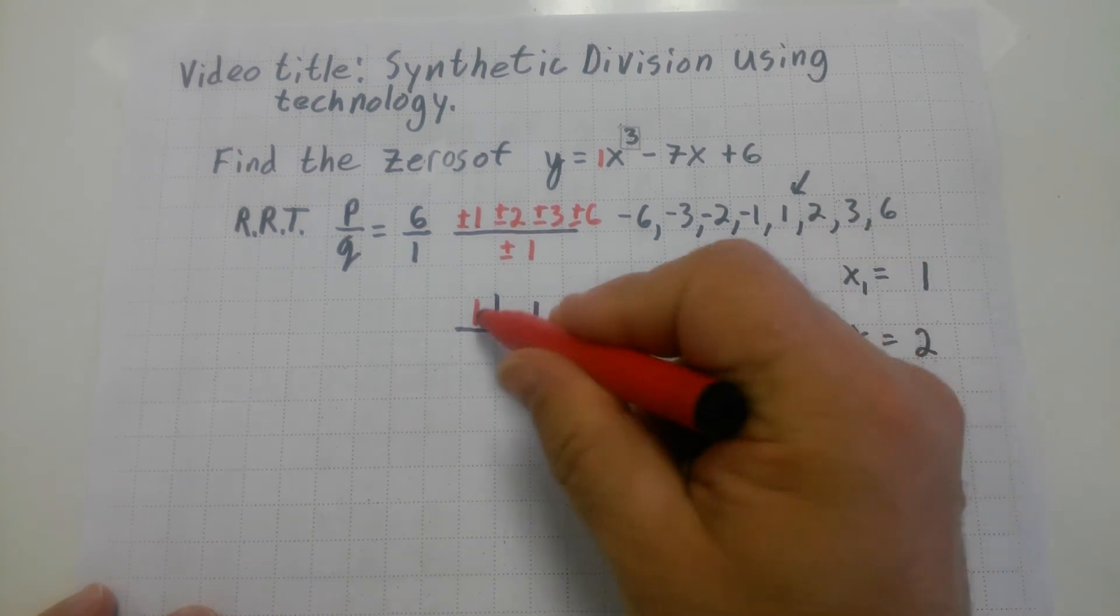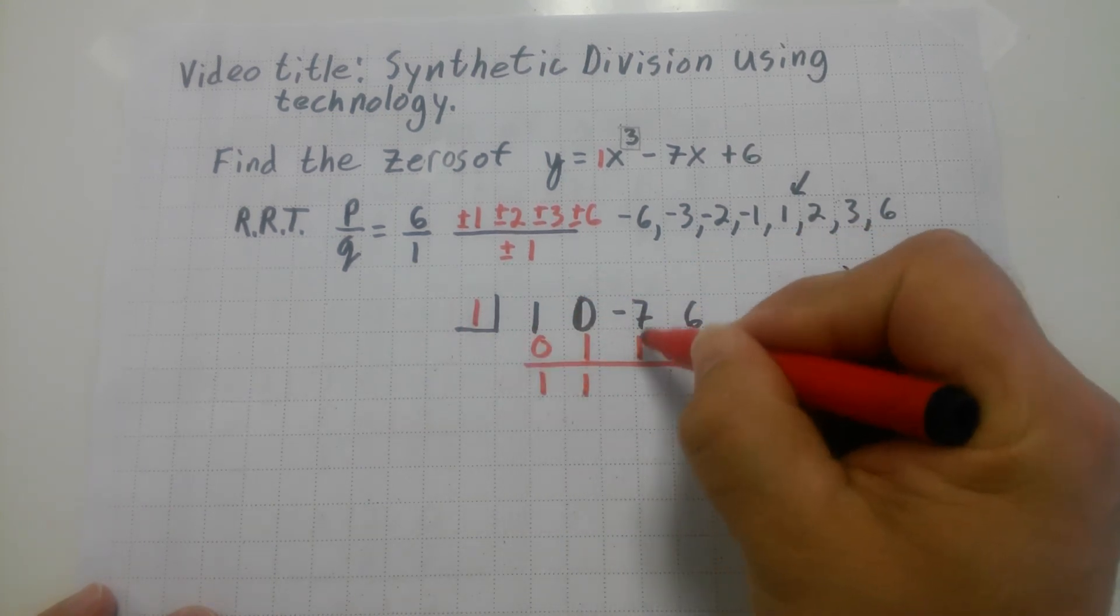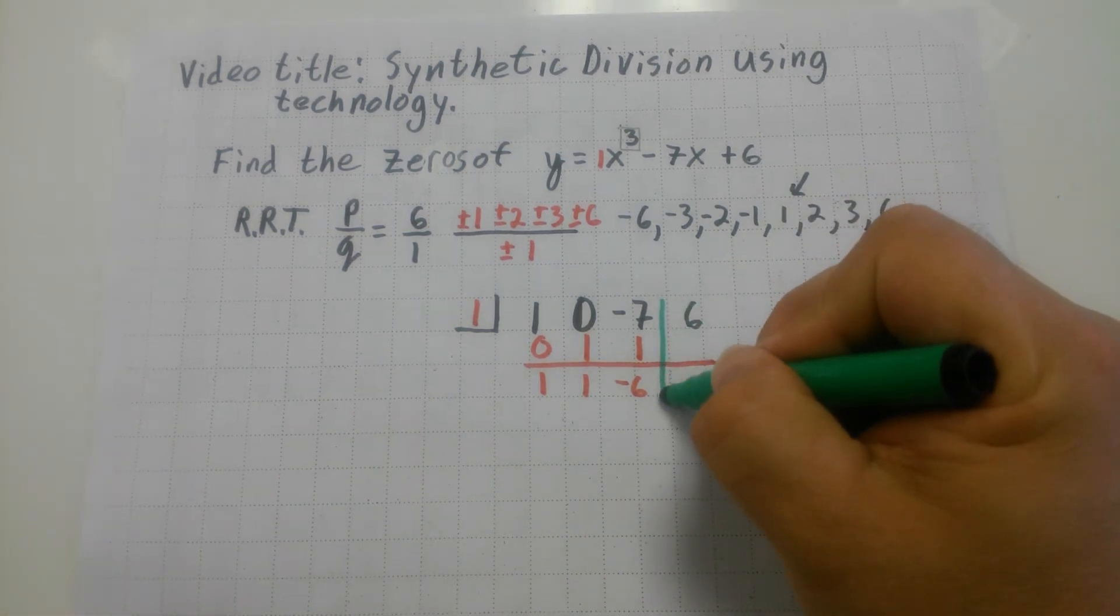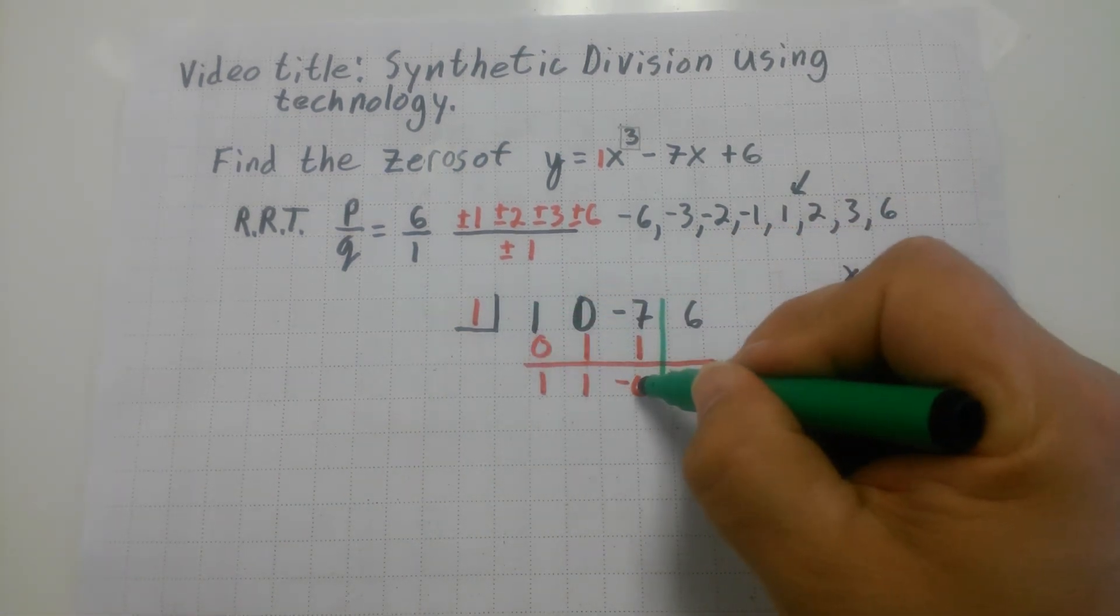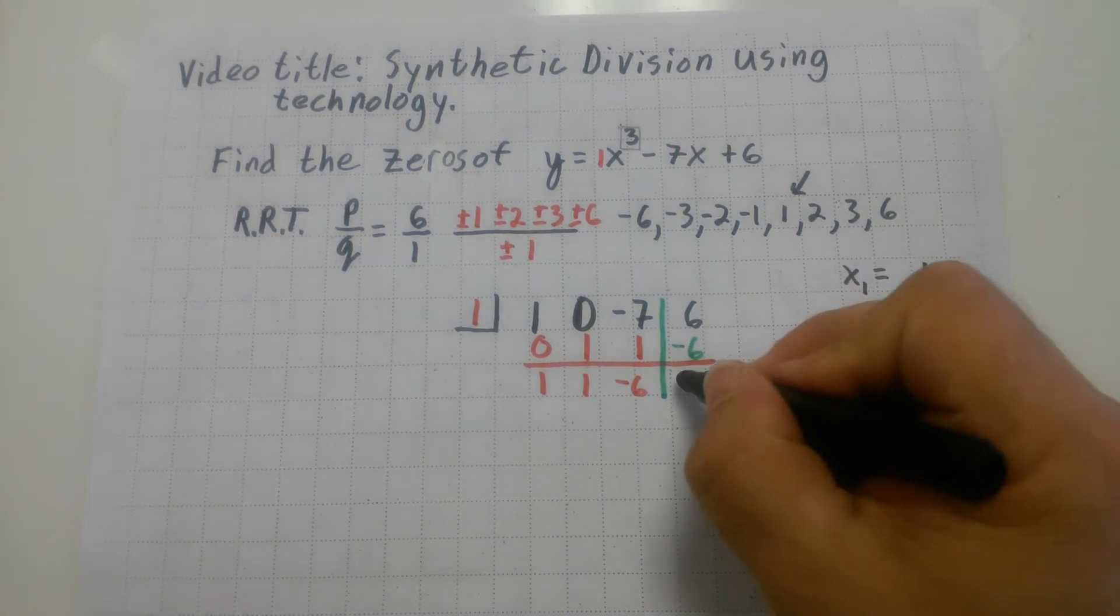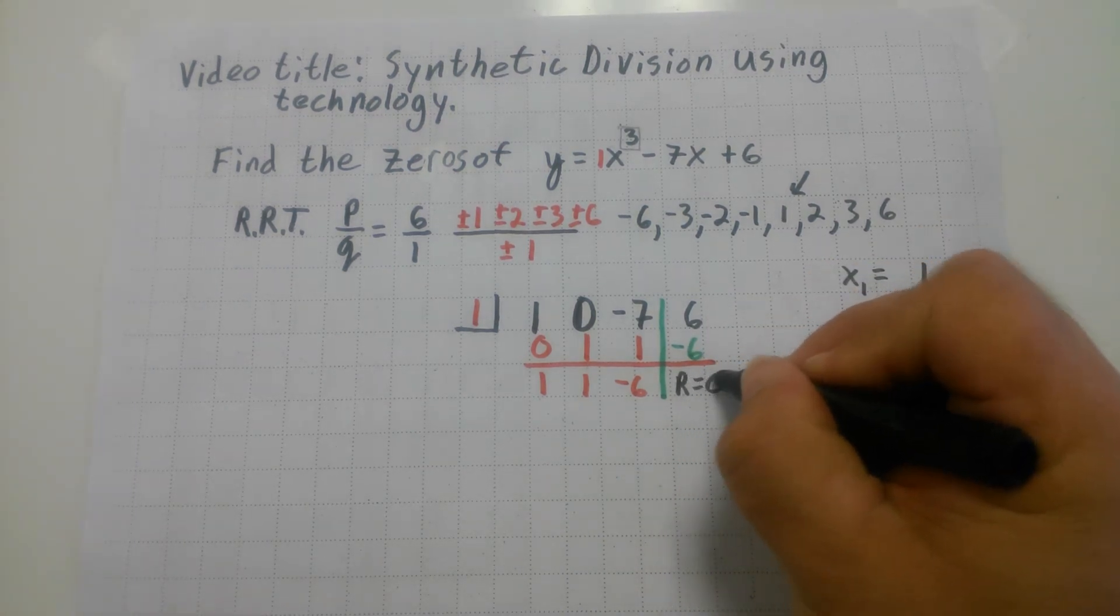What's zero plus one? One. What's one times one? One. What's negative seven plus one? Negative six. Well, I have to slow down a little here. What's one times negative six? Negative six. What's the remainder? In this case, the remainder equals zero.